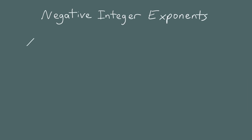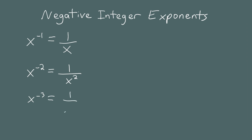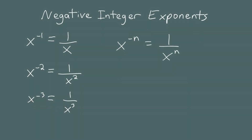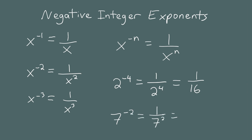Next, let's look at negative integer exponents. x to the negative 1 power simply means 1 over x. x to the negative 2 power means 1 over x squared. x to the negative 3 power is 1 over x cubed. In general, x to the negative n power means 1 over x to the n. So for example, 2 to the negative 4 power is 1 over 2 to the 4th, which is 1 over 16. And 7 to the negative 2 power is 1 over 7 squared, which is 1 over 49.